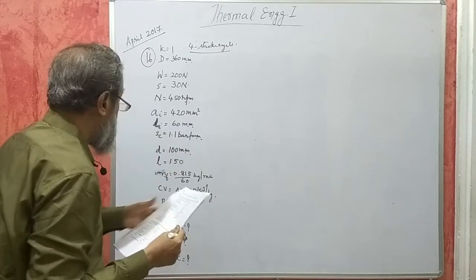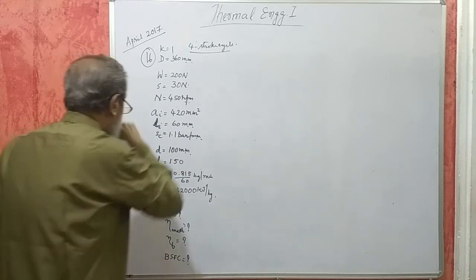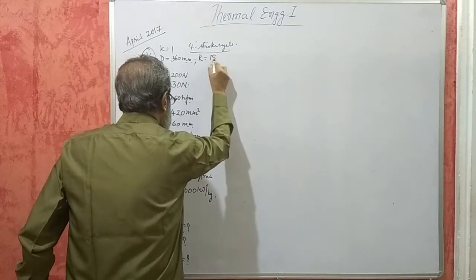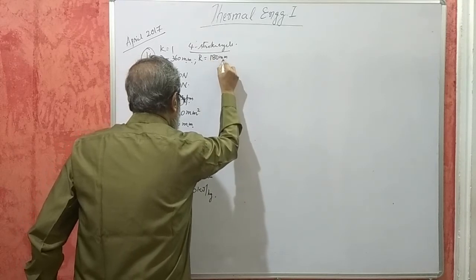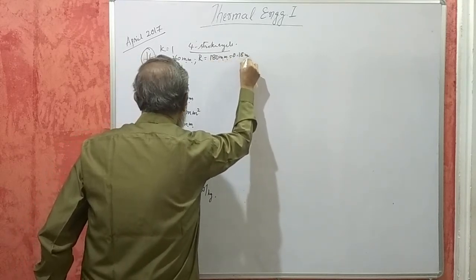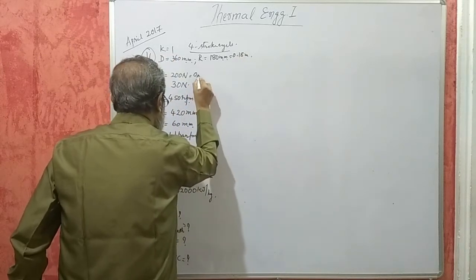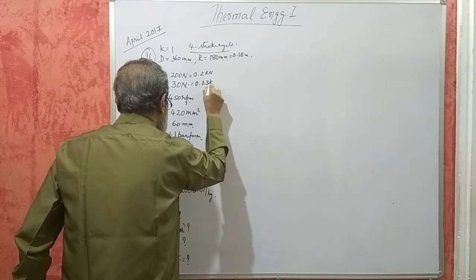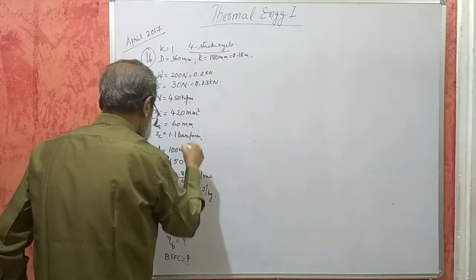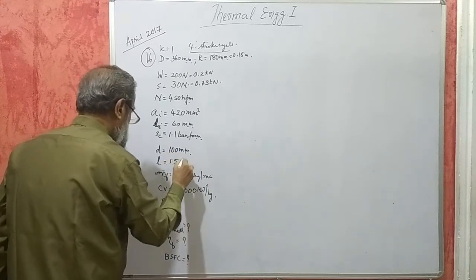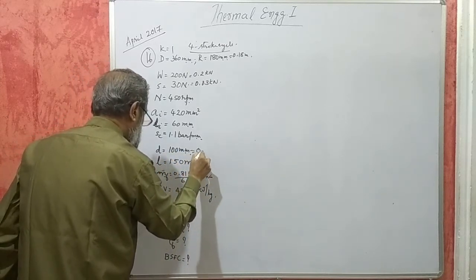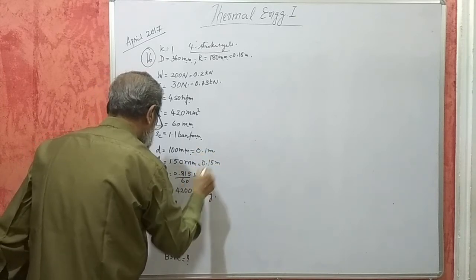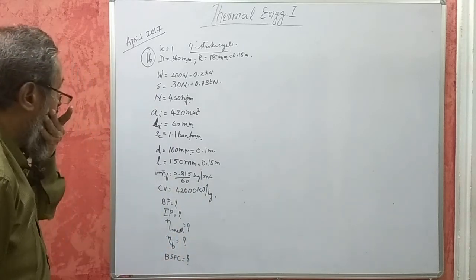With rope brake, the following data are taken. So R will be 180 mm or 0.18 meter. This will be 0.2 kilonewton, this will be 0.03 kilonewton. This will be 0.1 meter, 0.15 meter.